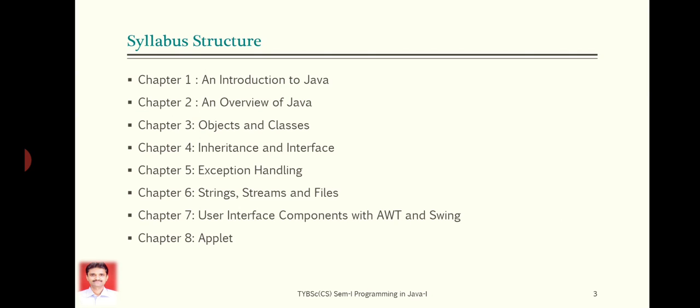In chapter 4, Inheritance and Interface. We'll go through how to define or how to create inheritance in Java. Inheritance topic is already covered in C++, which are the different types of inheritance. How to override methods, then concept of polymorphism, how to use dynamic binding. All these topics will be covered in this chapter.